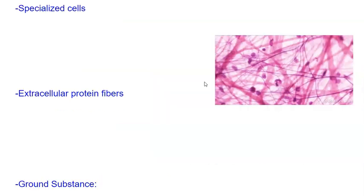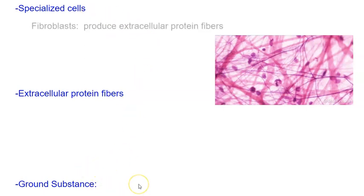Let's look at those three things: specialized cells, protein fibers, and ground substance. There are lots of cells, but we're only going to look at three. First, let's look at the fibroblast. The fibroblast is the most abundant cell in connective tissue, and it's the cell that produces the protein fibers.